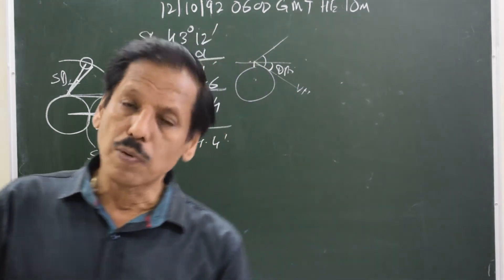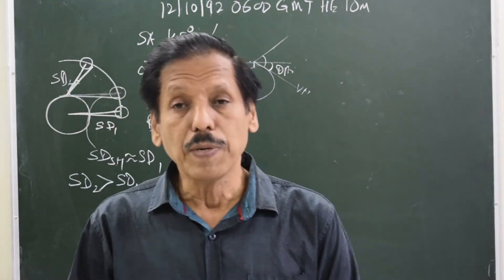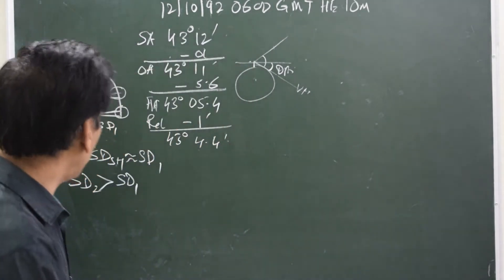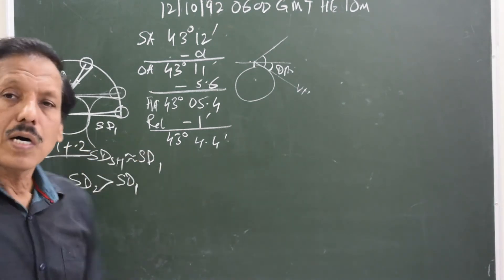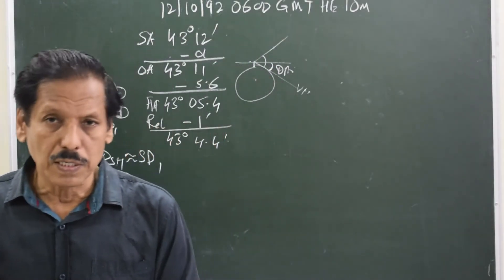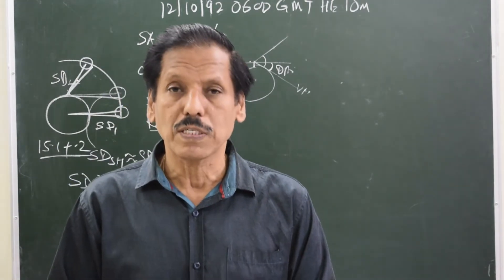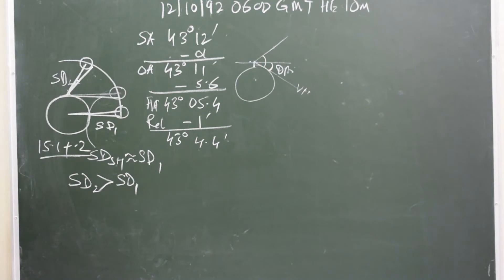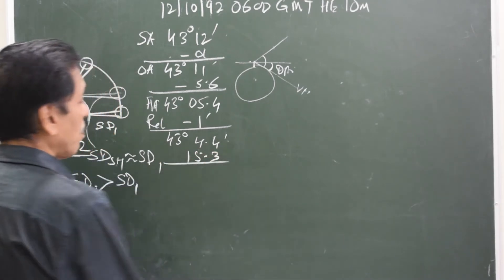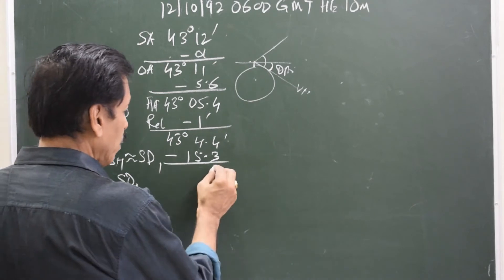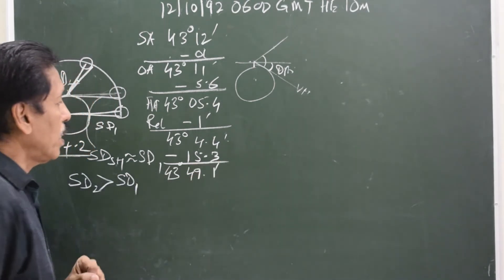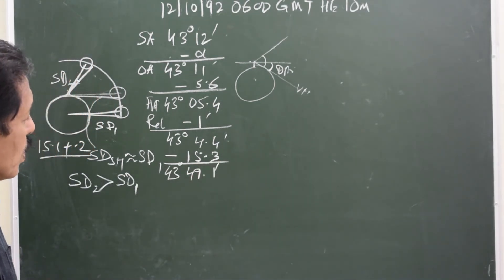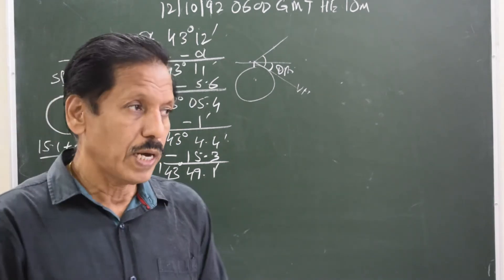Semi-diameter for every day is given at the bottom of the daily page of the nautical almanac. Suppose the semi-diameter read from the almanac is 15.1. Add augmentation of semi-diameter — the table is given around page 456 of the nautical almanac, and you will find augmentation to be about 0.2. So augmented semi-diameter is 15.3. But because we had taken the upper limb, this correction is negative, giving us 43 degrees 49.1 minutes corrected for augmented semi-diameter.